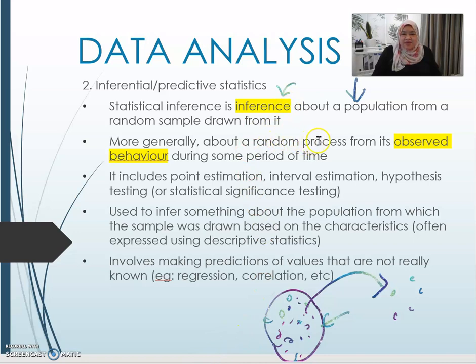More generally, about a random process, it's observed behavior during some period of time. It's not just one time, but it requires some period of time. It includes estimation, interval estimation, hypothesis testing, or statistical significance testing used to infer something about the population from the sample that was drawn based on the characteristic. For example, the characteristic here is individuals with spectacles within the age of perhaps less than 10 years old, or perhaps 10 to 20 years old, so it represents the different age of individuals in that particular population.